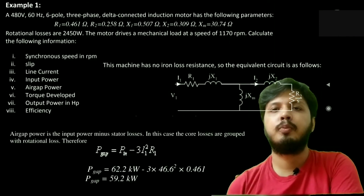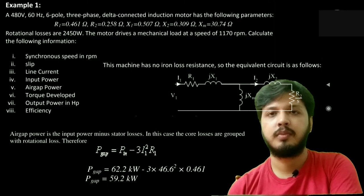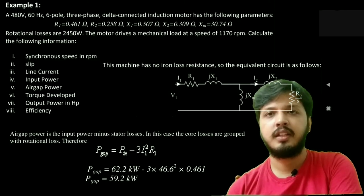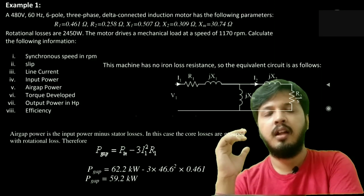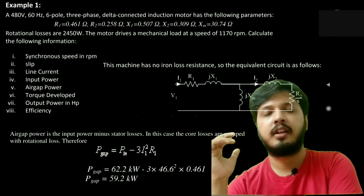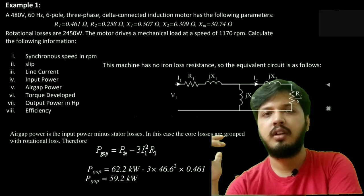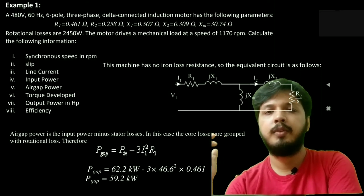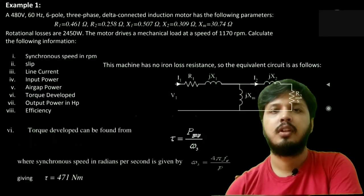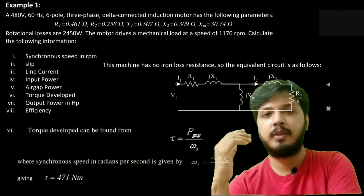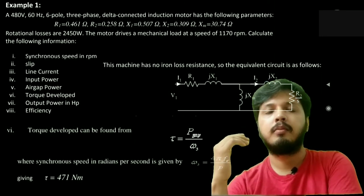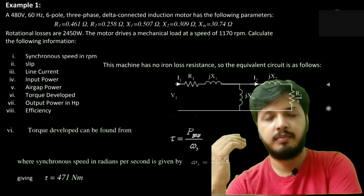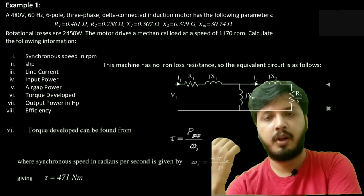Now air gap power is the input power minus the stator loss. In this case, the core losses are grouped with rotational loss. Therefore, PG is equal to PIN minus 3 I1 squared R1, that is 59.2 kilowatt. Torque developed is given by PG by omega S.